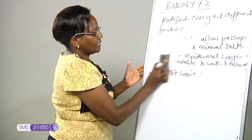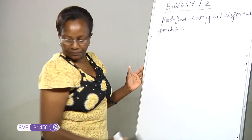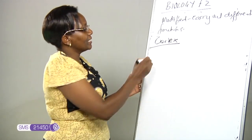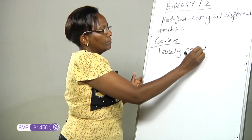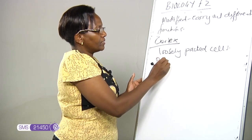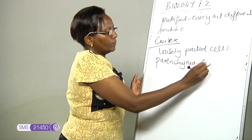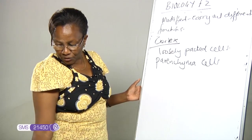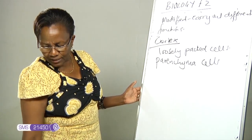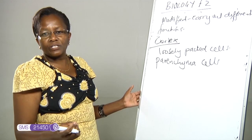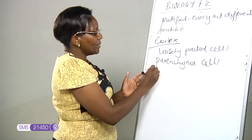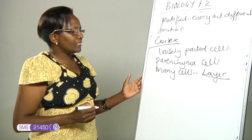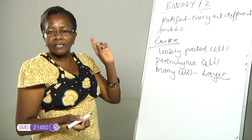The next layer is the cortex. The cortex is made up of loosely packed cells called parenchyma cells. It is through these cells that water and mineral salts move from one cell to the other until they reach the vascular bundles. The cortex is a layer made up of many cells, unlike the periferous layer which is a single-celled layer, and it occupies most of the space in the root.